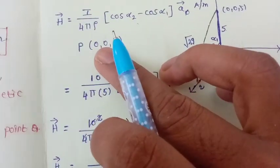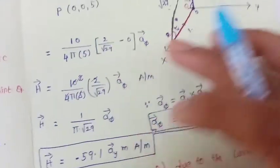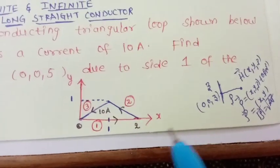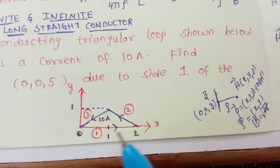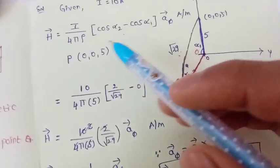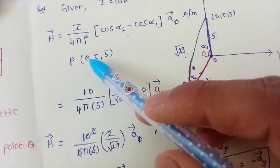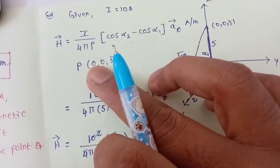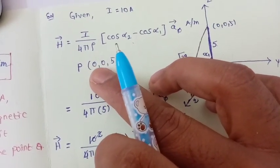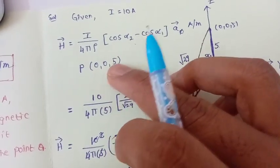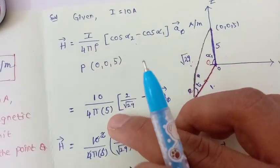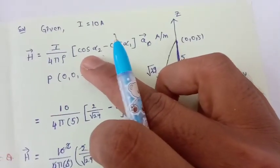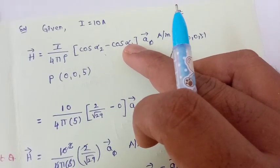Let us assume that x is not equal to 0 at the point. But the current carrying conductor, if you observe this figure, is on the x-axis, so we have to make x equal to 0. Since no x value is given for the point, rho is simply equal to 5. Then I is equal to 10 A. Now we have to find cos α2 minus cos α1.